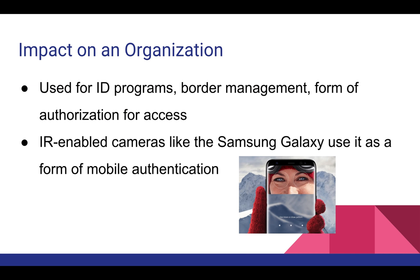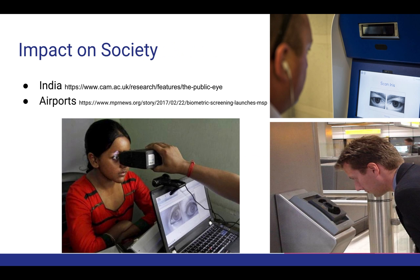Many different organizations have used iris recognition for different purposes. For example, the Indian government has used it as another form of identification alongside fingerprint, and the UAE has used it in their airports to control entry into the country to prevent illegal immigrants and unauthorized individuals from entering. Most famously, Samsung has added IR-enabled cameras to their Galaxy phones, which allow users to unlock their phone through iris scanning.